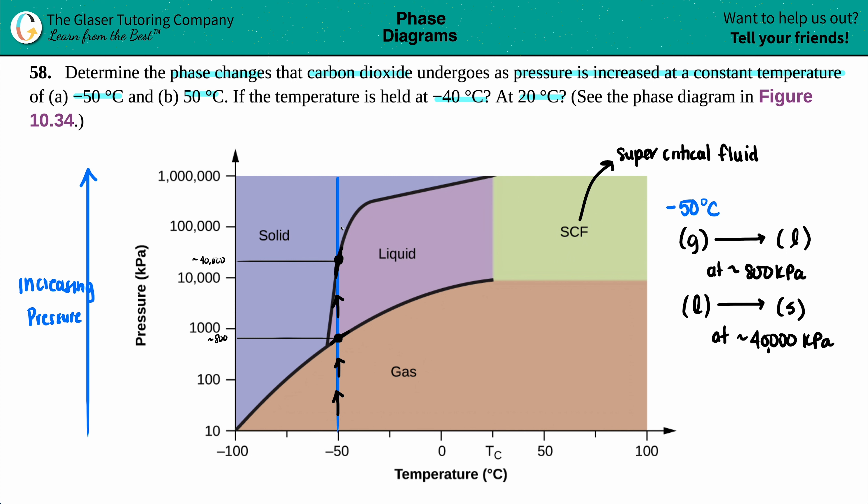Now, just make sure you keep going up and up and up. And it's just going to keep being a solid. So, at negative 50 degrees Celsius, there are two phase changes: gas to liquid at around 800 kPa, and liquid to solid at roughly 40,000 kPa. The first one is done.